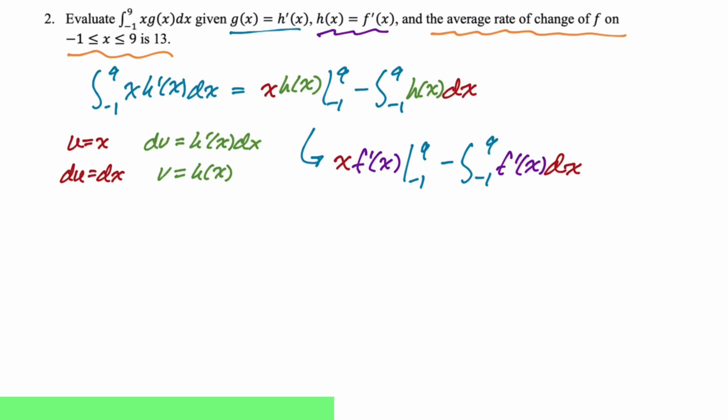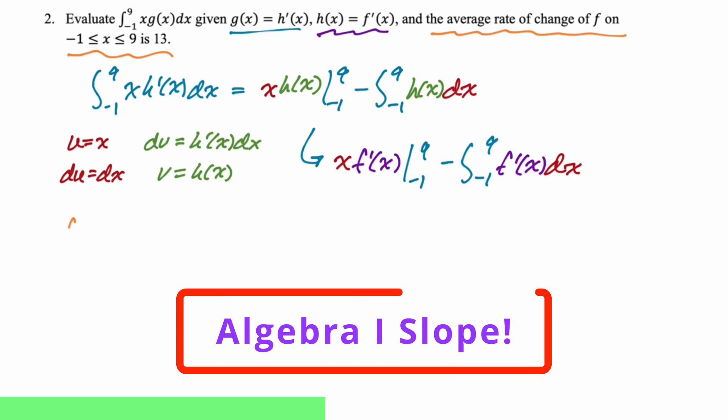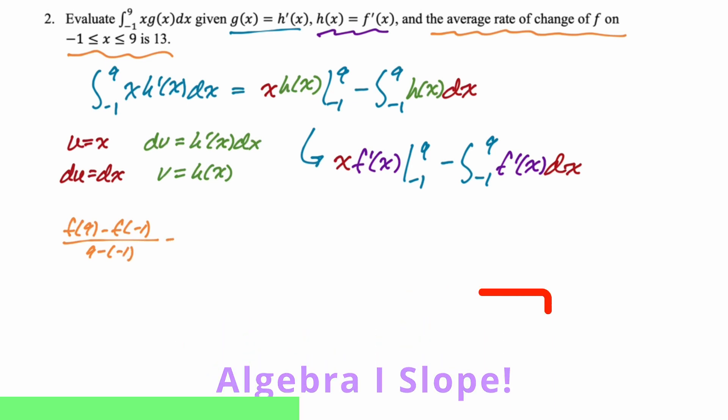That one's not as problematic, because we do have another piece of information. We know that the average rate of change of f on negative one to nine is 13. Average rate of change is just algebra one slope. So it's saying f of nine minus f of negative one over nine minus negative one is 13. Nine minus negative one is 10. So we now know that f of nine minus f of negative one is just 130. Now, that's important because the integral from negative one to nine of f prime of x dx is f of nine minus f of negative one. That's the fundamental theorem. So that part is good.